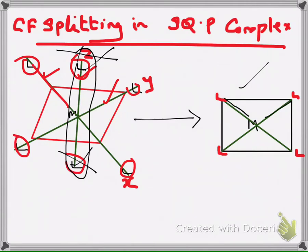The bond length in the square planar complex is less than in the octahedral complex — they come close to the metal atom. When they come close, there will be higher repulsion between the lone pair of the ligand and the electrons in the metal. Since we removed 2 ligands along the z-axis, any d orbital having a z component — that means dxz, dyz, and dz² — these 3 orbitals experience less repulsion, as there is no ligand on the z-axis.